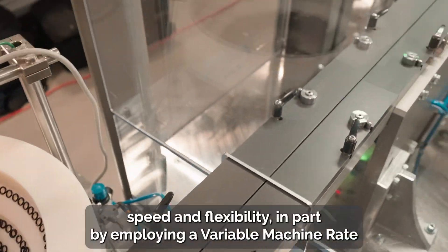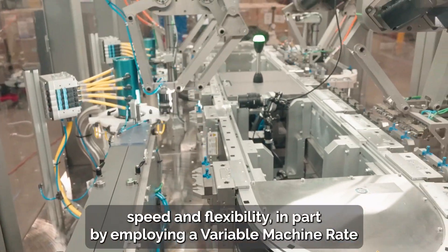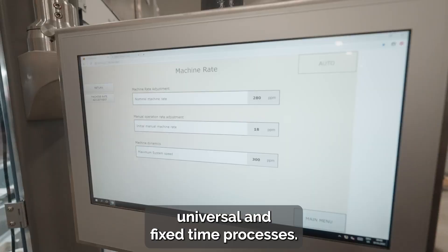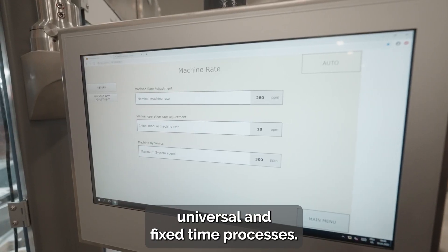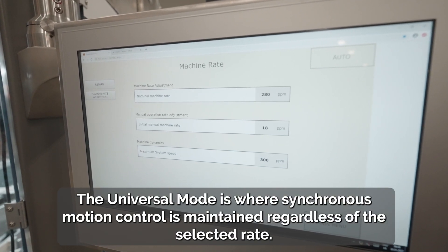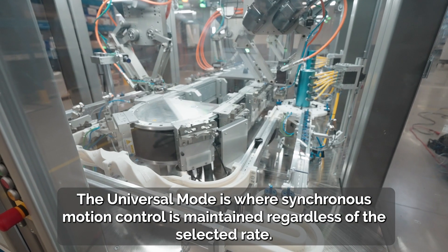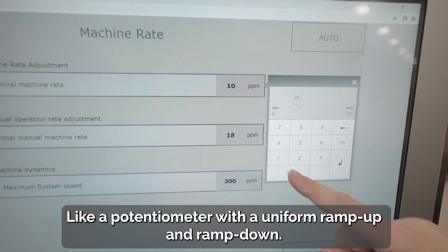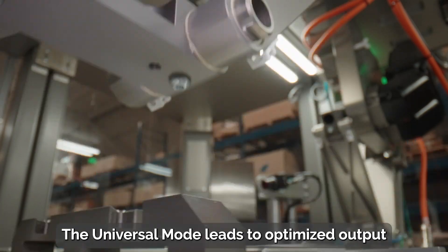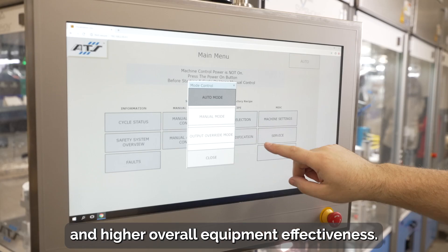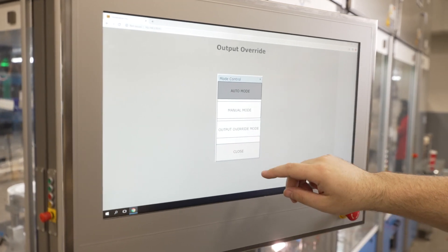Symphoni accomplishes speed and flexibility in part by employing a variable machine rate in two modes: universal and fixed time. The universal mode is where synchronous motion control is maintained regardless of the selected rate, like a potentiometer with a uniform ramp up and ramp down.